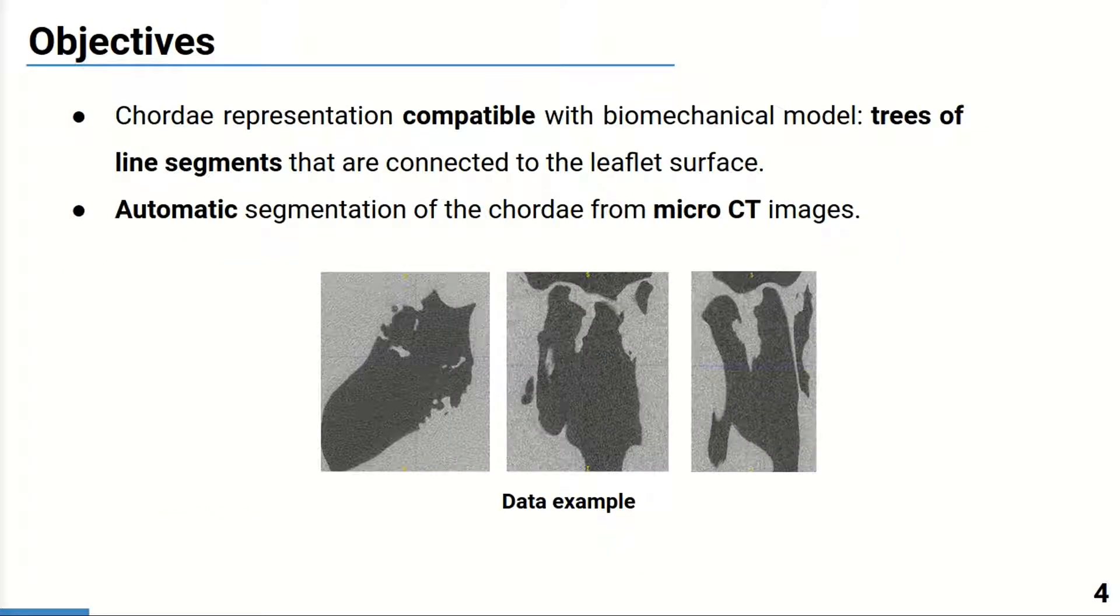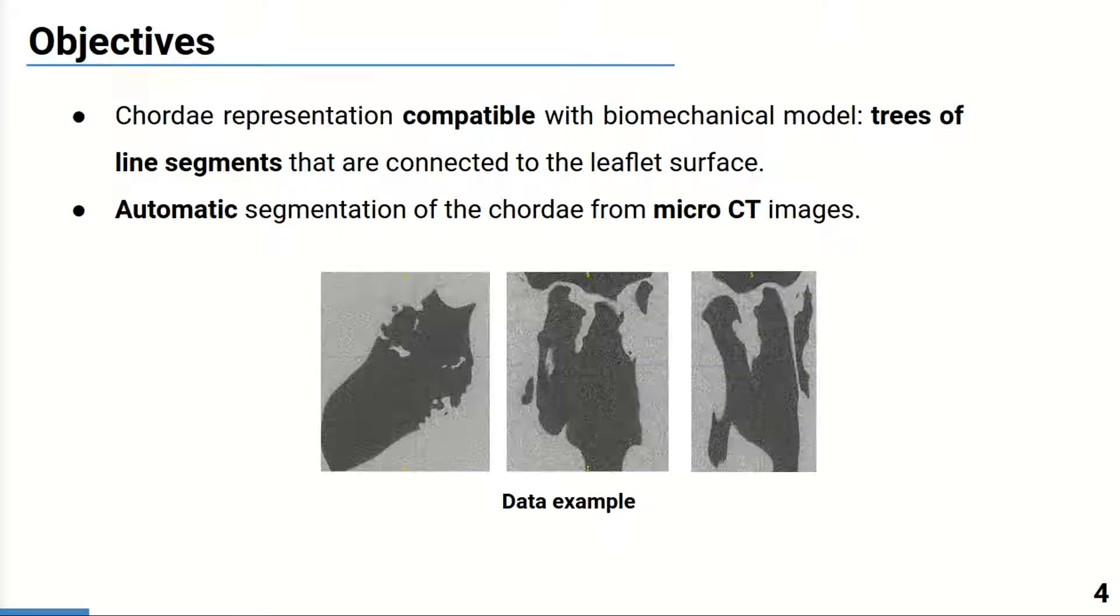In this work, we propose methods to provide chordal representation being compatible with a biomechanical model and obtain it automatically from micro CT images. Here you can see an example of the image in three views. The choice of this imaging modality is explained by a compromise between data precision, as all the components of the valve can be distinguished, and the proximity to the clinical conditions.